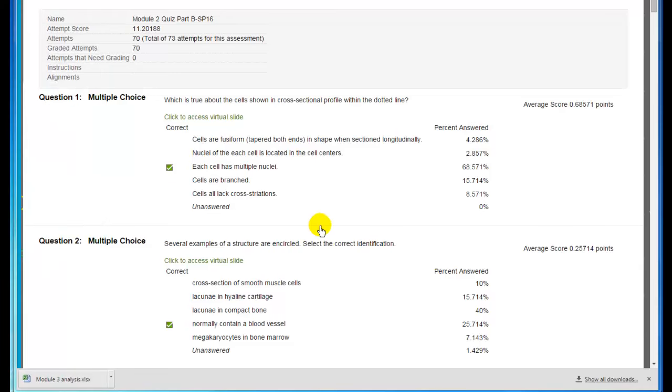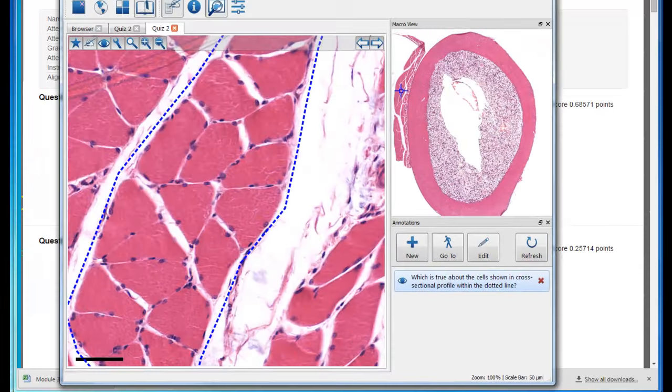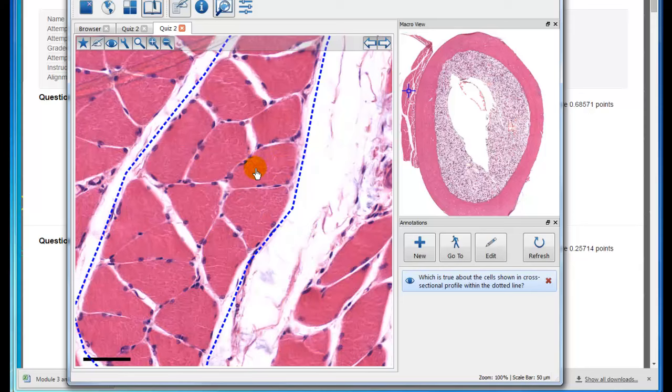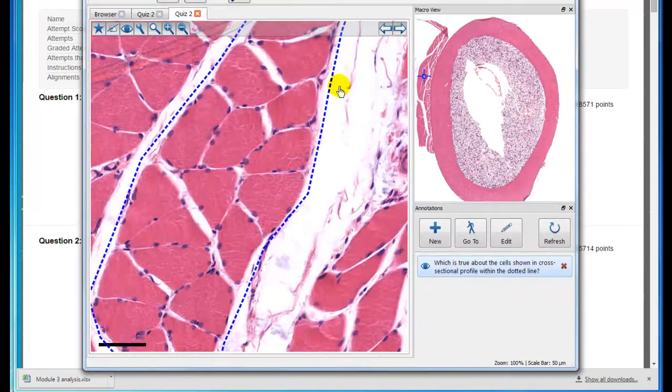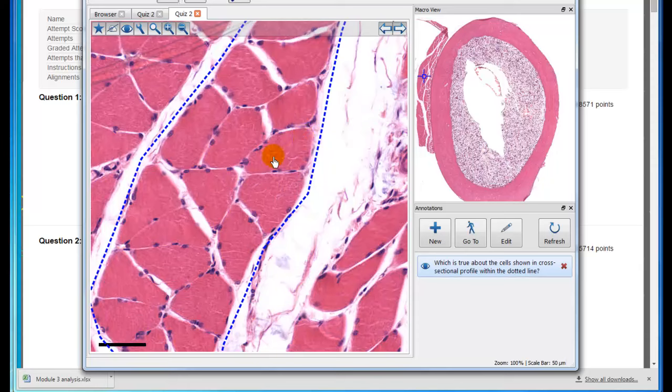Some people thought that the cells all lack cross-striations. Well, that's not true. Yes, in this profile they do. But if you recognize these are striated skeletal muscle cells, then if you looked at them in longitudinal section, they would have cross-striations. You have to extrapolate and realize these do have cross-striations. Some people thought they were branched. If they were branched, you would see different sizes of cross-sections and a nucleus in the center somewhere. That's characteristic of cardiac muscle.